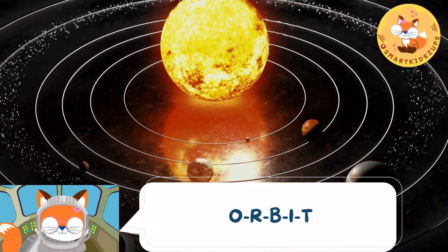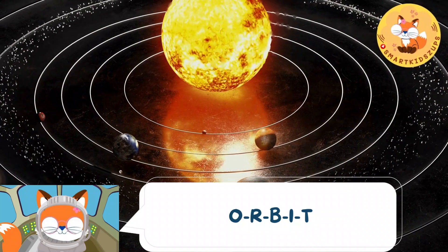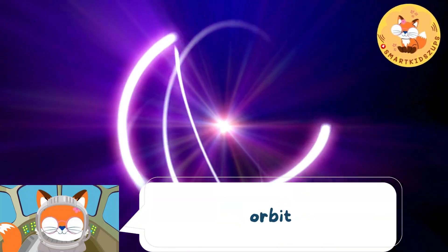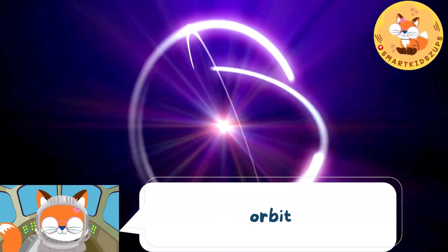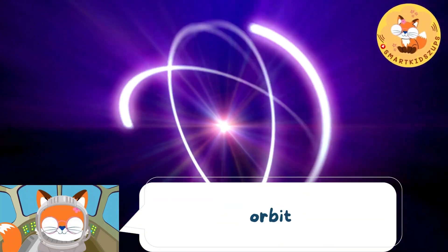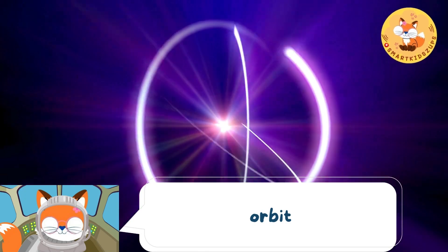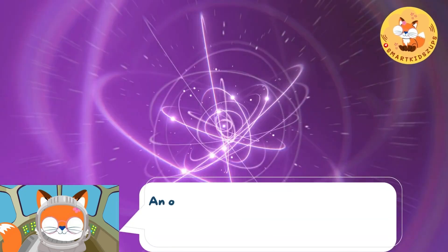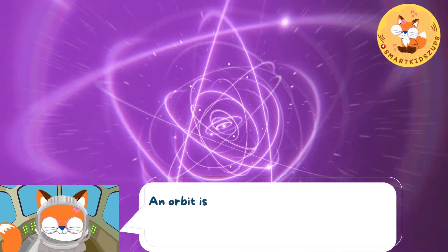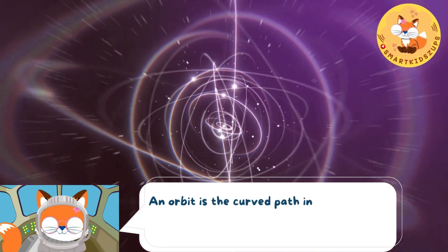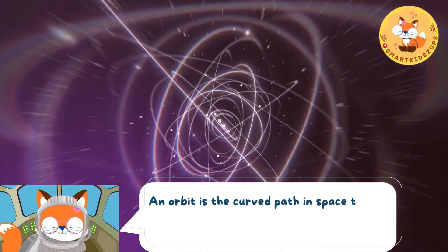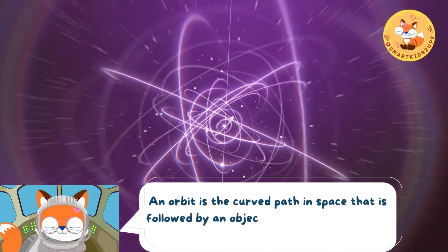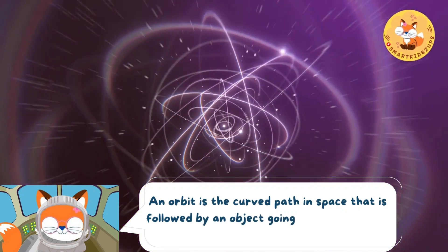O-R-B-I-T. Orbit. An orbit is a curve passed in space that is followed by an object going round and round a planet, moon, or star.